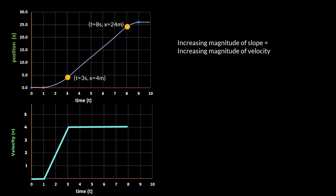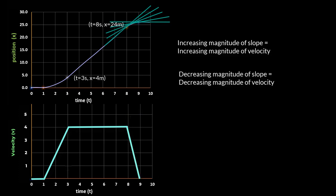Between t = 8 and t = 9 seconds, the slope of the tangent is reducing, so instantaneous velocity at each point is also reducing and we get a graph where velocity is decreasing. The slope is always positive, indicating instantaneous velocity is positive and the particle is moving in the plus x direction. After t = 9 seconds, the position of the particle is not changing, which means velocity is 0.